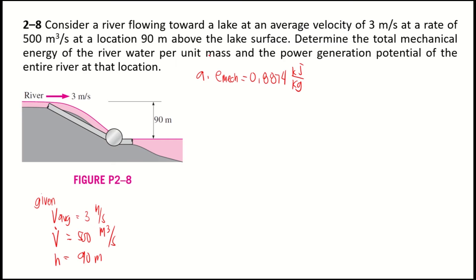For Part B, the power generation potential of the entire river at that location — the power generation potential is equivalent to the mechanical energy, which equals the mass flow rate times the mechanical energy per unit mass.